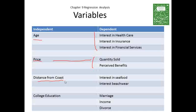Another example of an independent variable is distance from coast. That may influence the interest in seafood or the interest in beachwear.